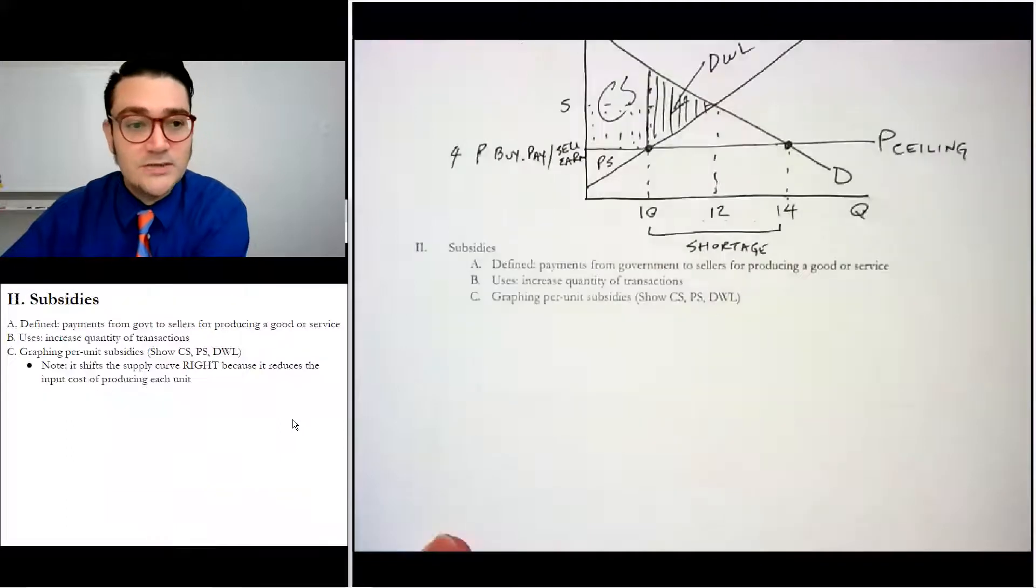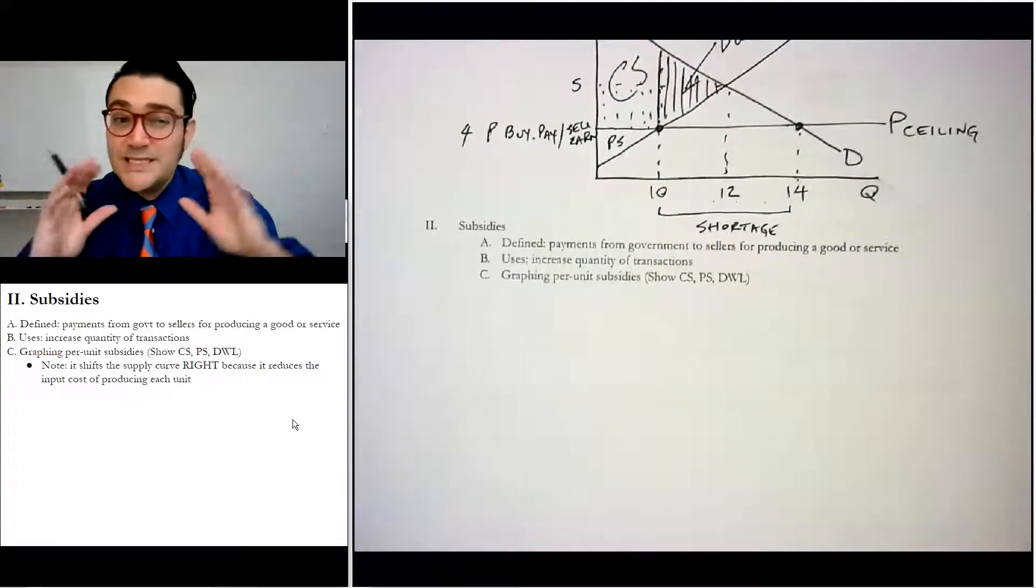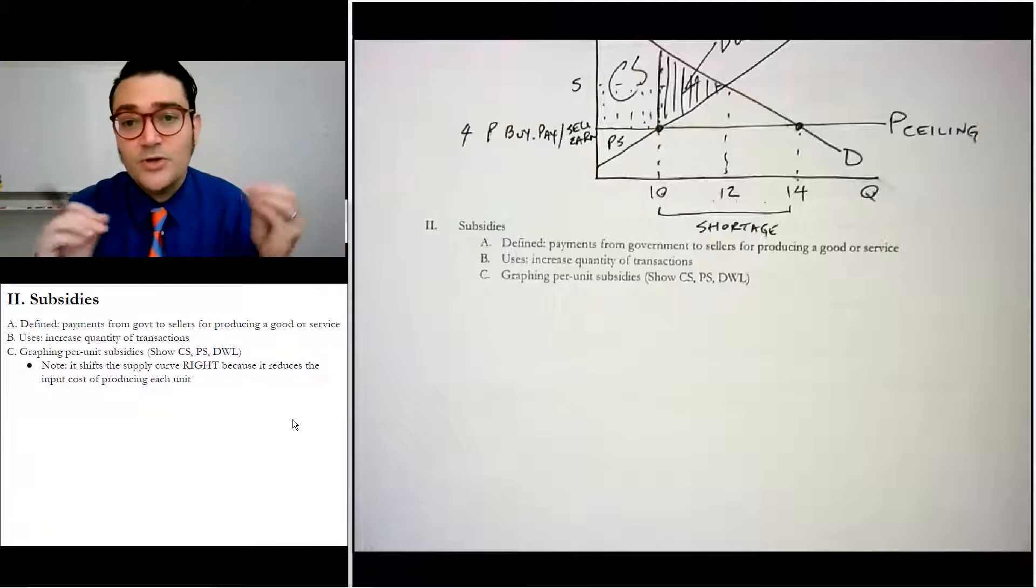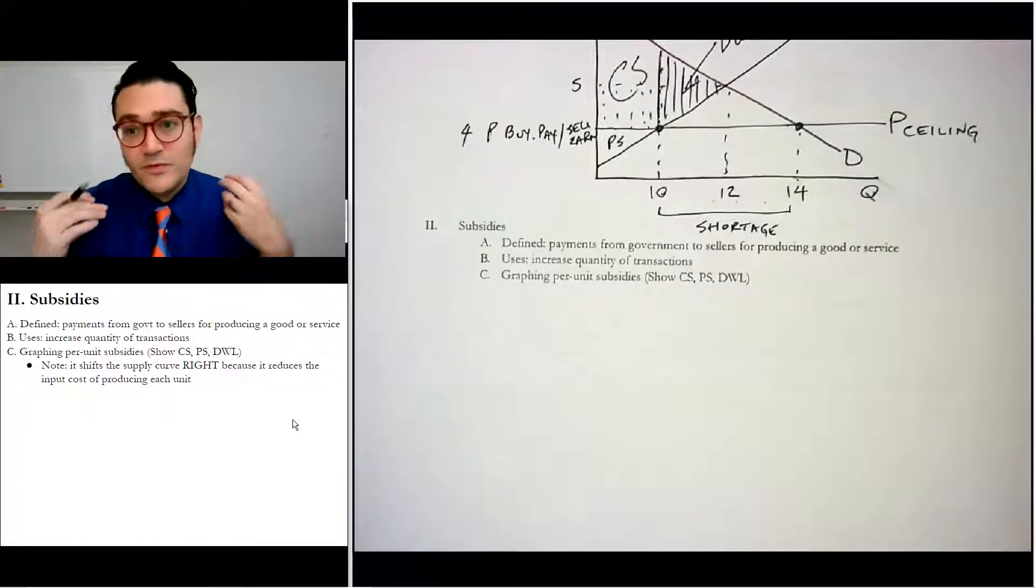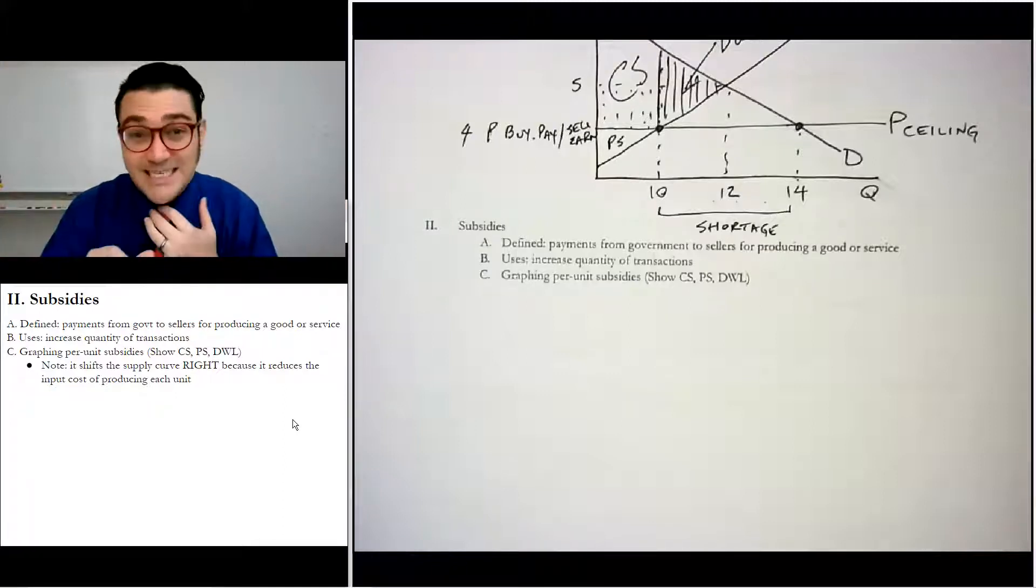Okay, now we're going to do subsidies. Now, subsidies, we haven't really talked about very much, but they are basically the opposite of a tax. A per unit subsidy would be a payment from the government to the seller for producing a good or a service. And we see them in things like vaccines.